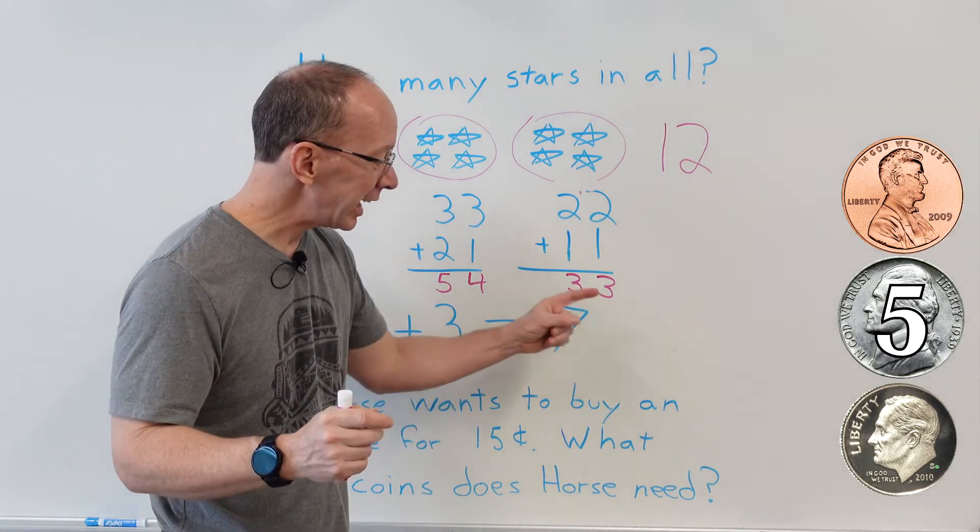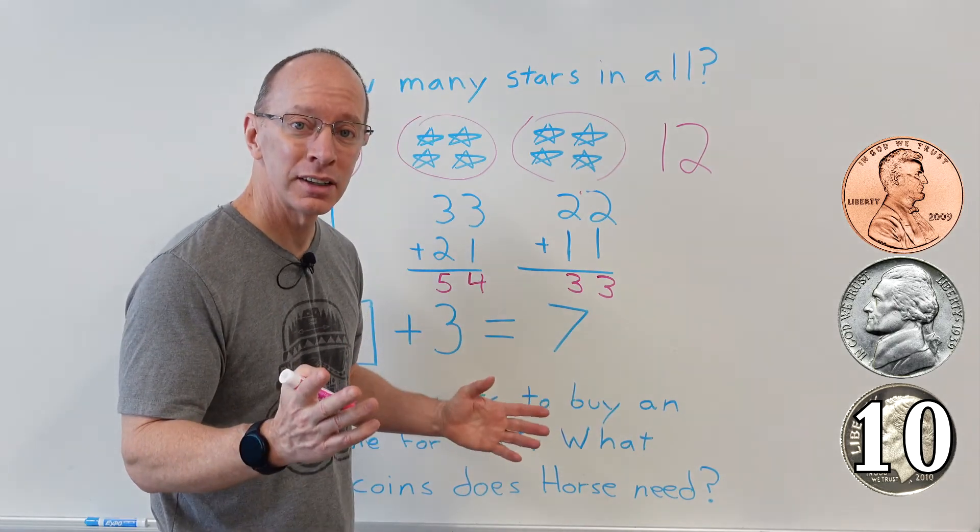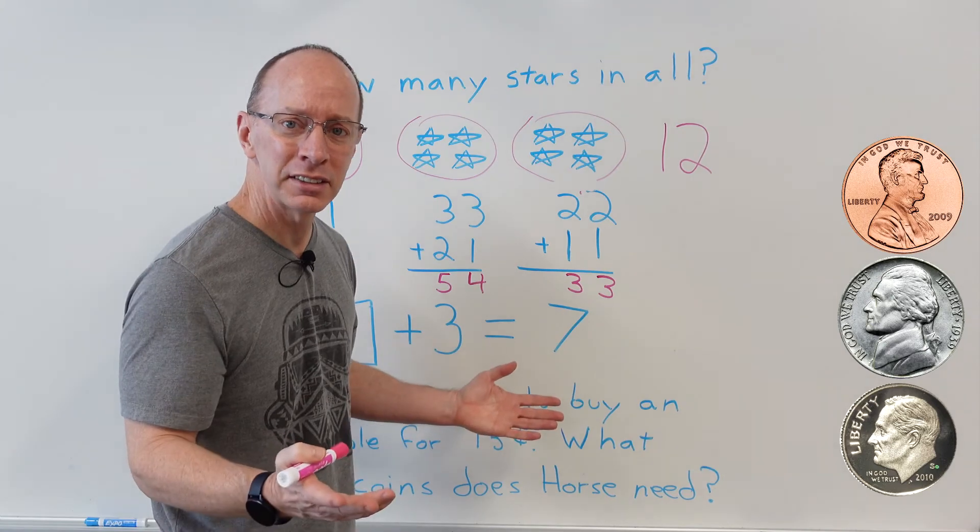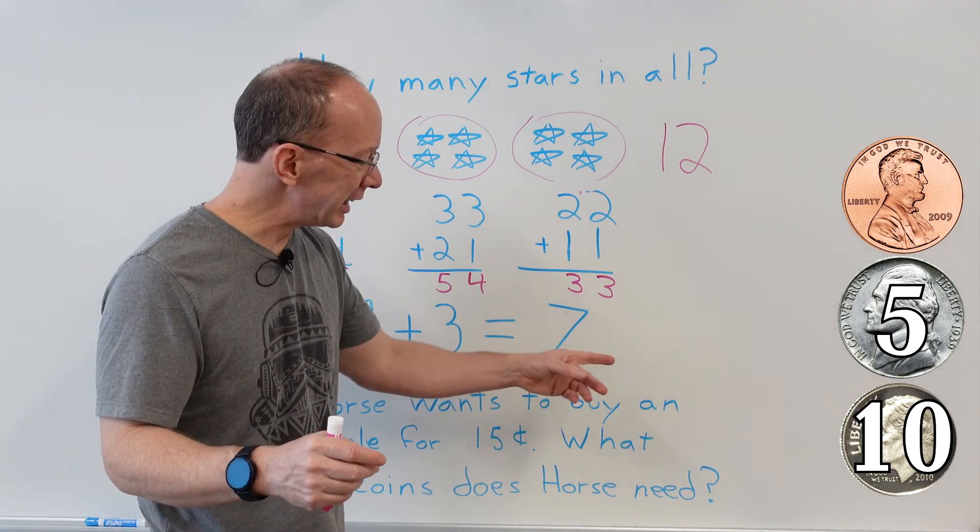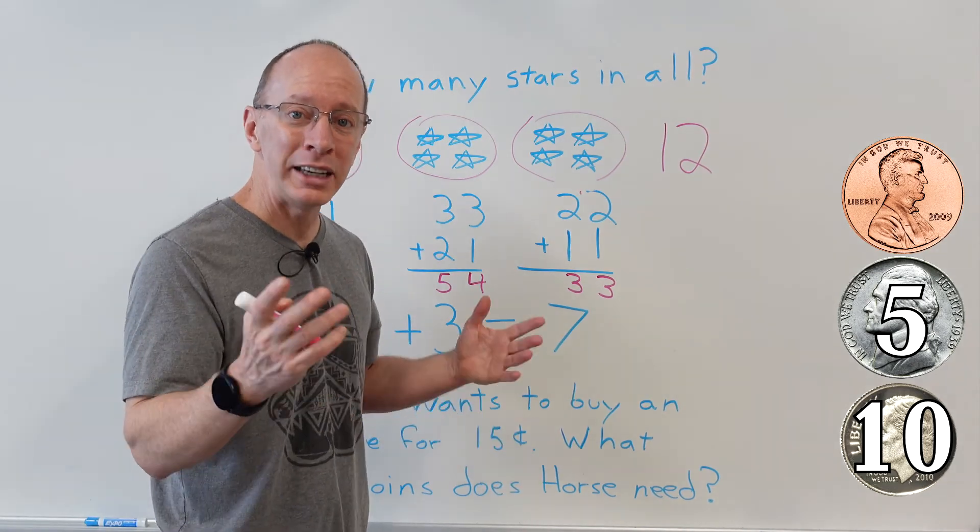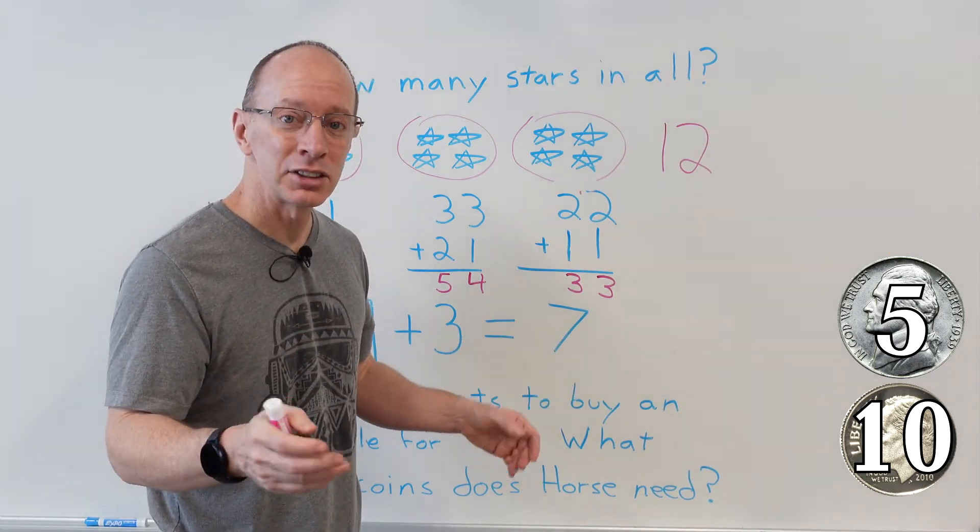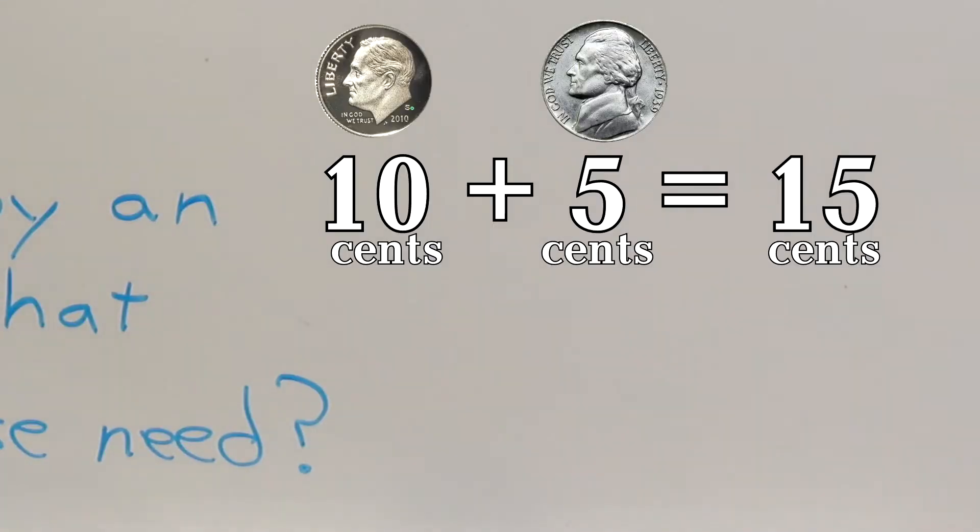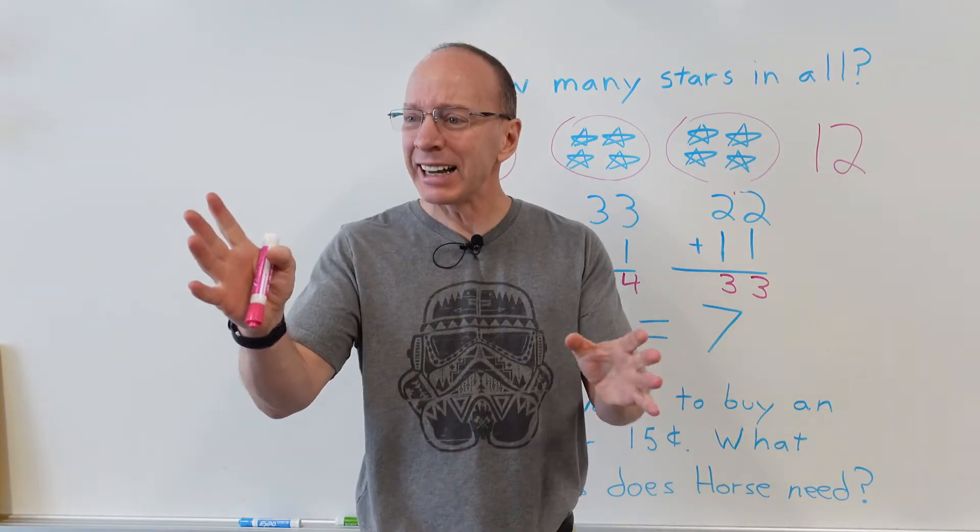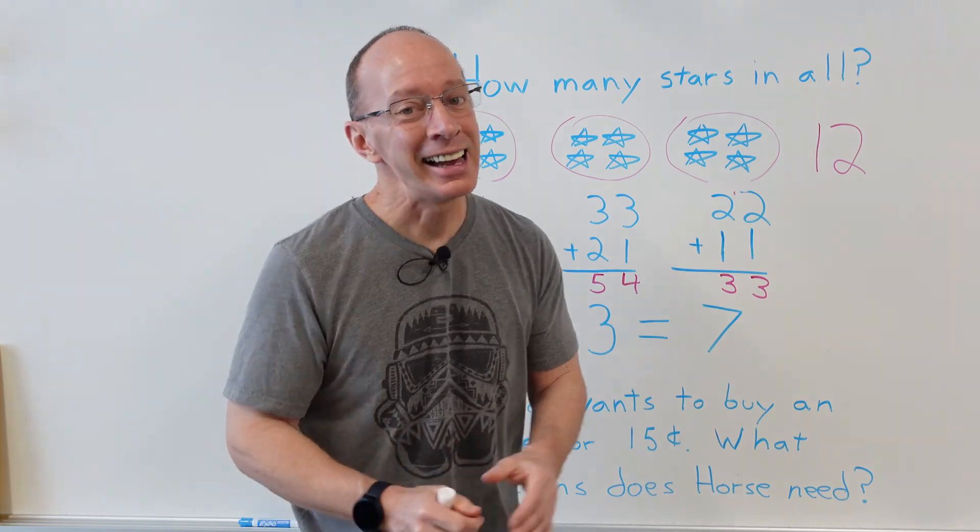So what two coins would equal 15 cents? You're right, a dime and a nickel. Ten plus five would equal 15. So 10 cents plus 5 cents would equal 15 cents, so that way Horse can buy his apple. Yeah, Horse is really excited here.